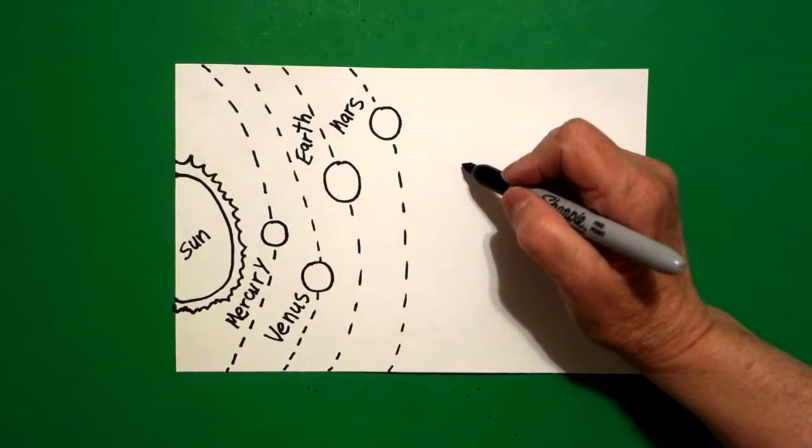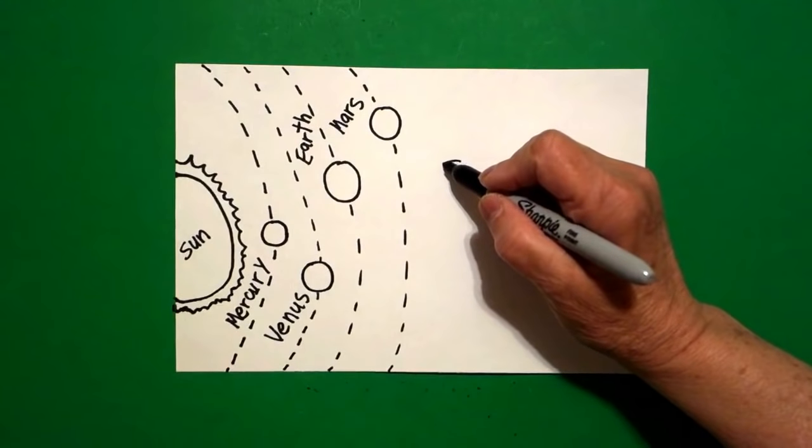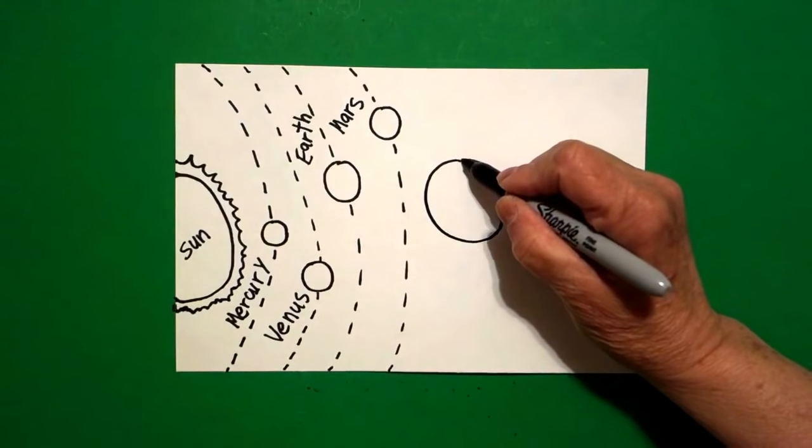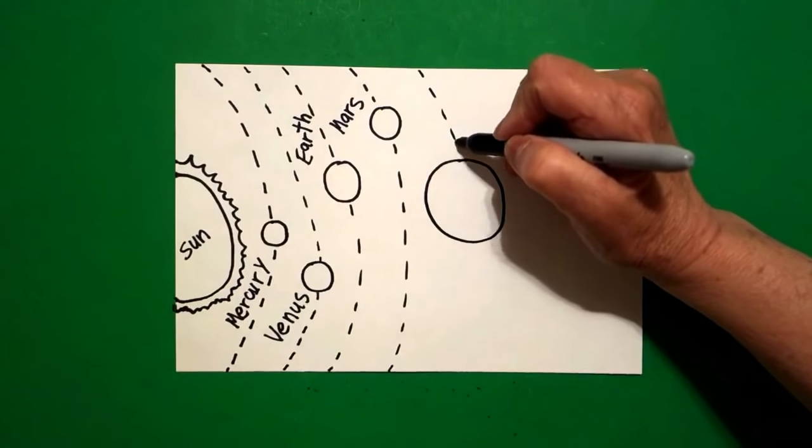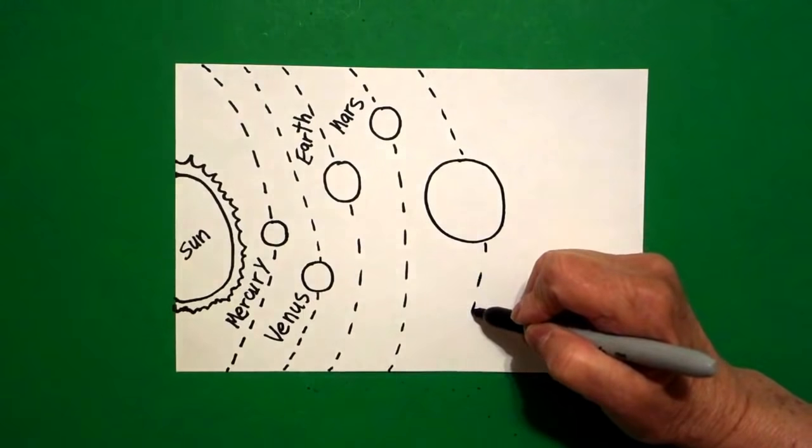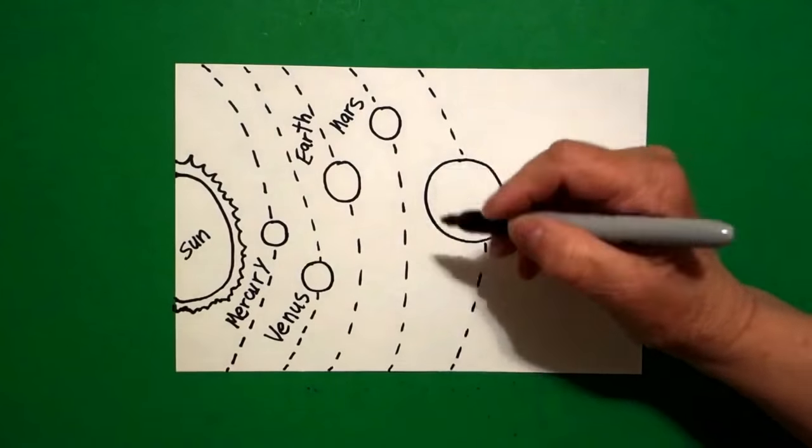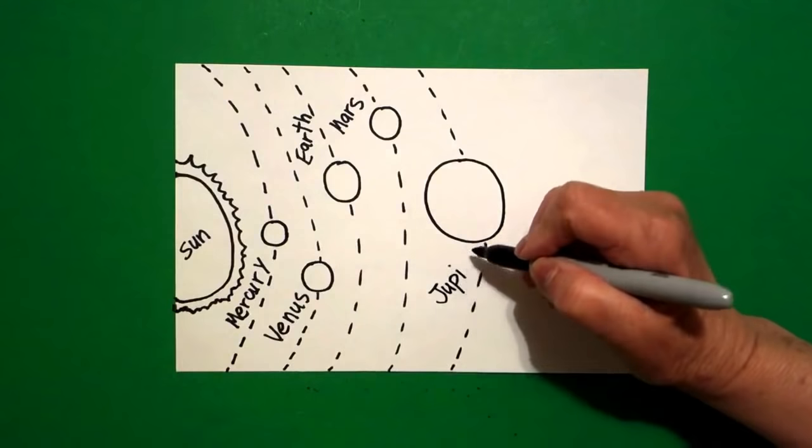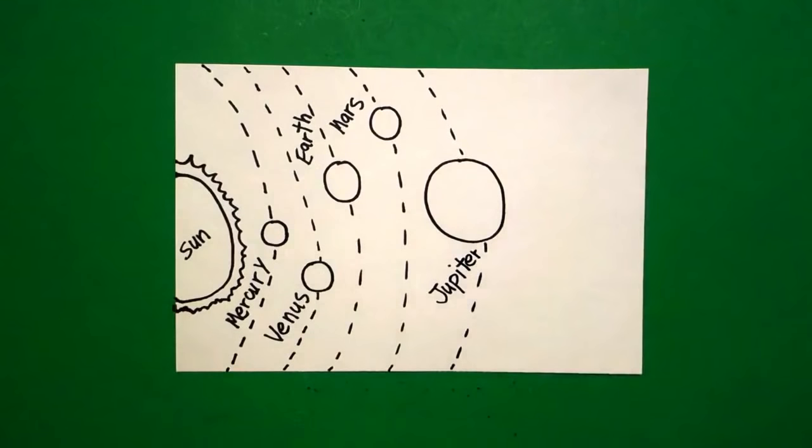Okay, the next planet is the big guy of the galaxy, and that is a bigger circle. Add your dotted line, jump over, and this is Jupiter. J-U-P-I-T-E-R.